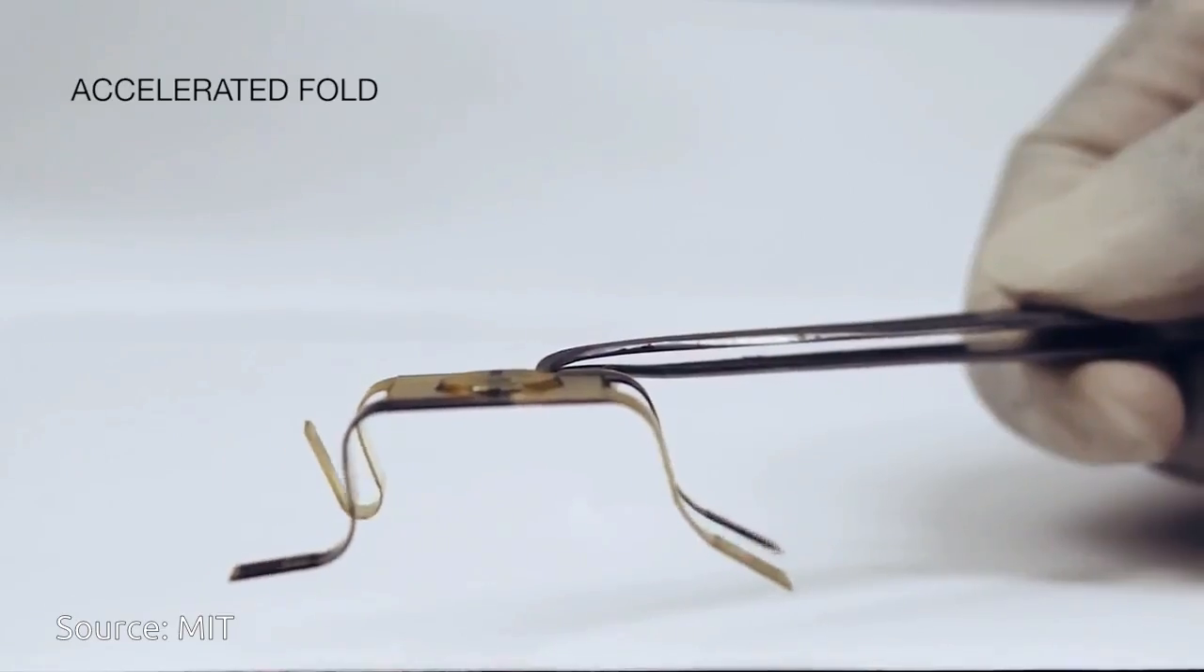While trying to develop an ink that yielded more flexible printed components, the CSAIL researchers inadvertently hit upon one that expanded slightly after it hardened. They immediately recognized the potential utility of expanding polymers and began experimenting with modifications of the mixture, until they arrived at a recipe that let them build joints that would expand enough to fold a printed device in half.